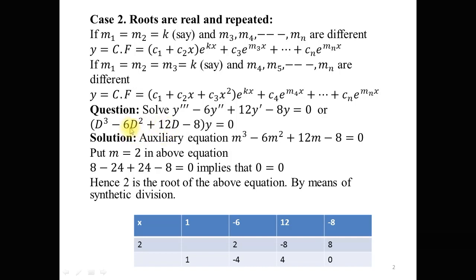The auxiliary equation for this differential equation is m³ - 6m² + 12m - 8 = 0. Now we are going to find the roots for this auxiliary equation. By the factor theorem, suppose we consider m = 2. If we put m = 2 in this auxiliary equation: 8 - 24 + 24 - 8 = 0.